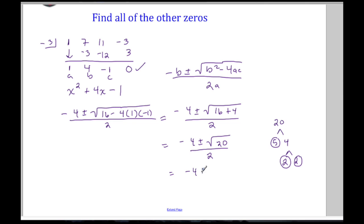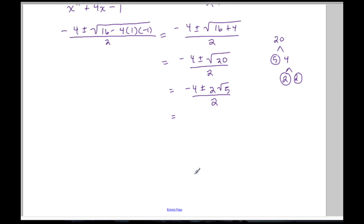So I have -4 ± 2√5 all divided by 2. I can continue to work on this problem because I see that each one of these terms has a common factor of 2, so everything can be divided by 2.